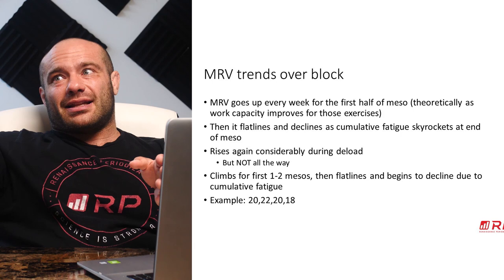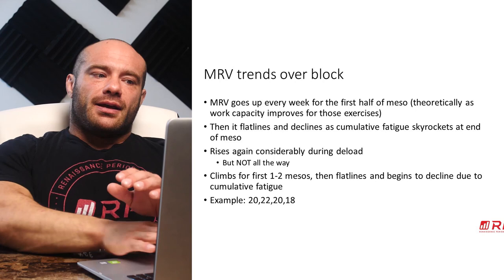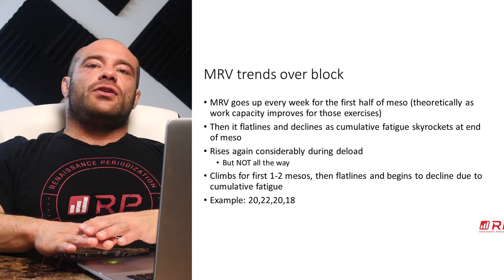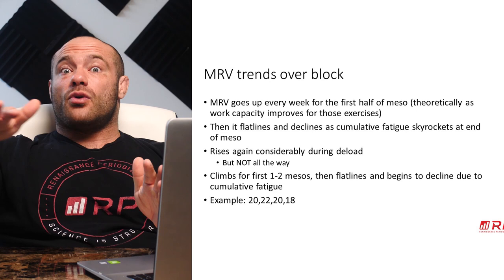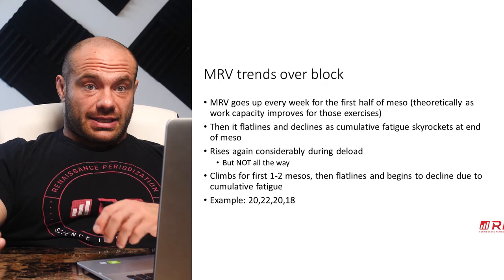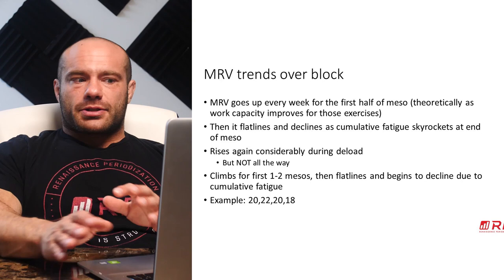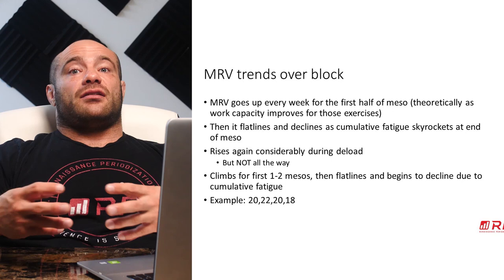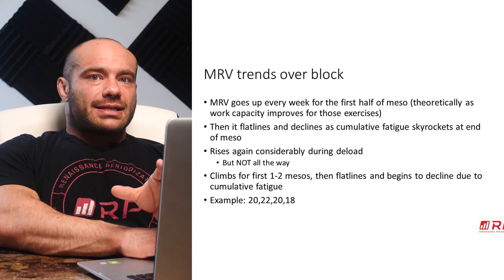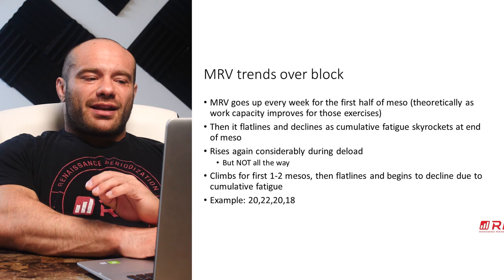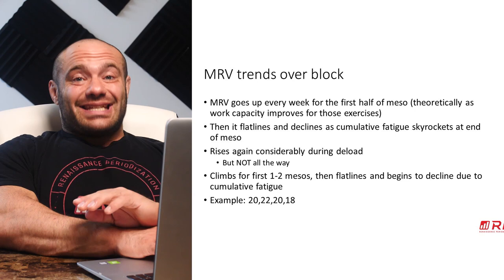MRV goes up, then flatlines, then comes down — and when it comes down it's easy to detect, which is when you know to deload. During a deload you drop fatigue significantly, so MRV rises again at the beginning of the next meso — but not all the way, because some cumulative fatigue continues to hang in there. Over the course of multiple mesos, fatigue slowly grows. In a block of four mesocycles, MRV probably climbs for the first one or two, flatlines toward the third, and then begins to decline. So your MRV might be 20 sets on the first meso, 22 on the second, 20 on the third, and 18 on the fourth.